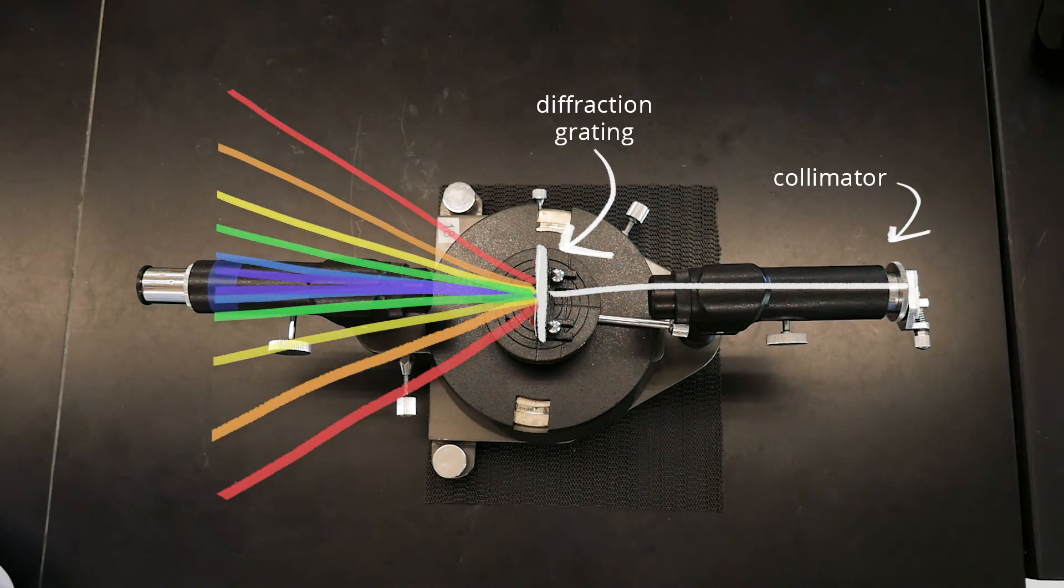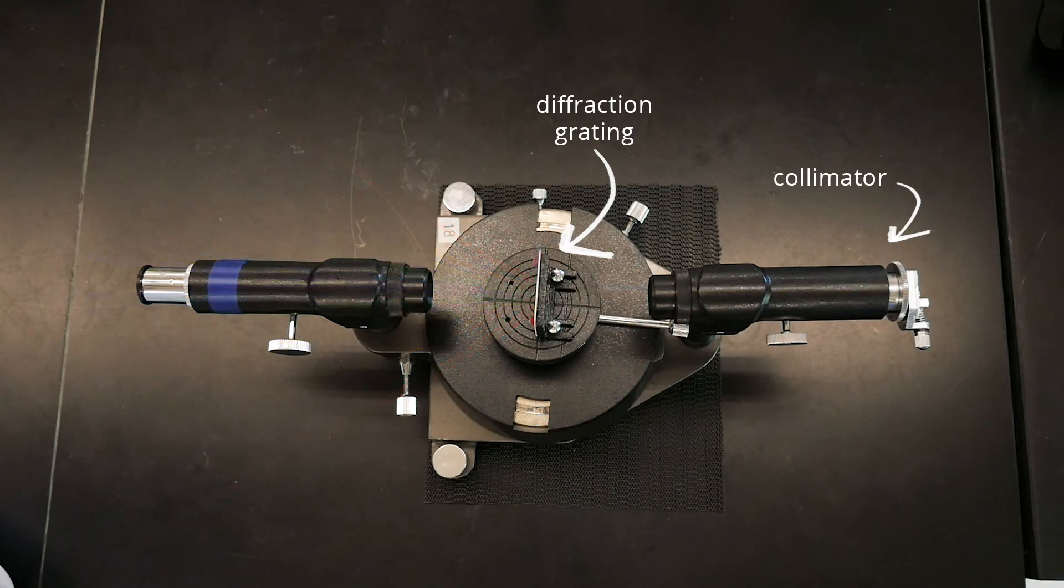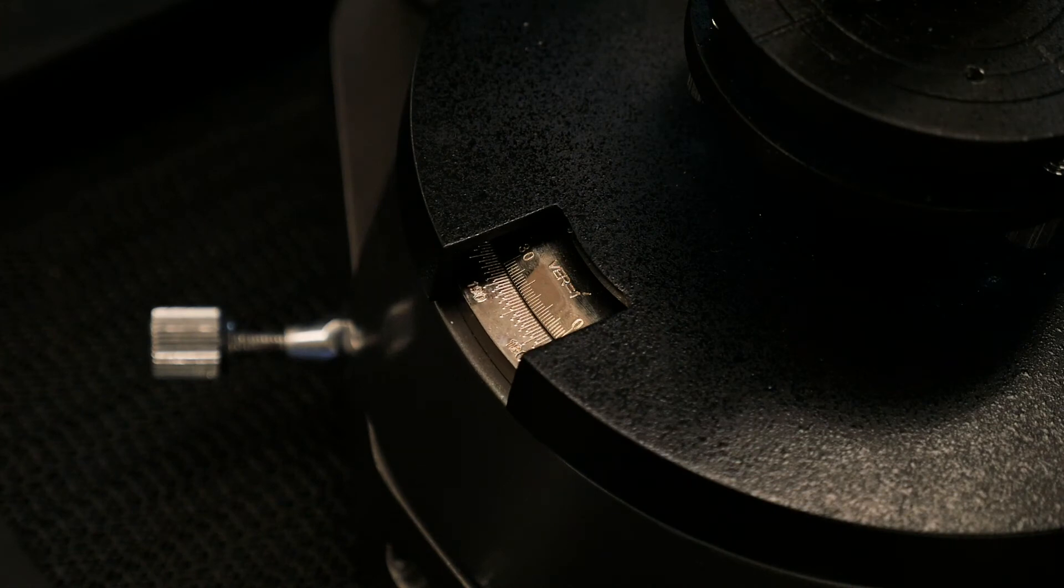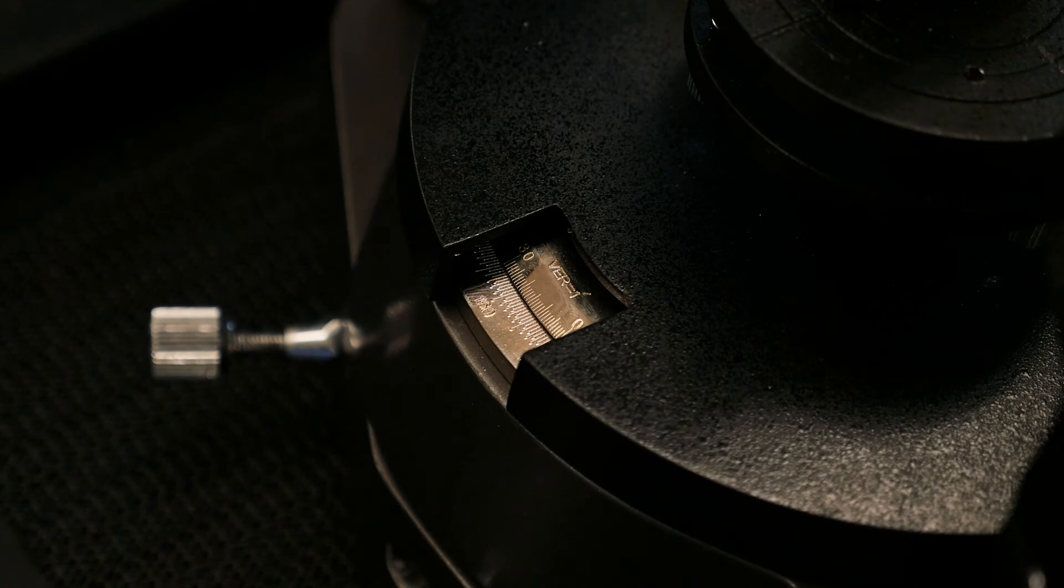In order to measure that diffraction angle accurately, you'll be looking for the diffracted photons through a narrow telescope mounted to a rotating base. That base has lines etched into the side to allow us to measure exactly how much we've rotated the base, which corresponds exactly to the angle of diffraction of our emitted photons.